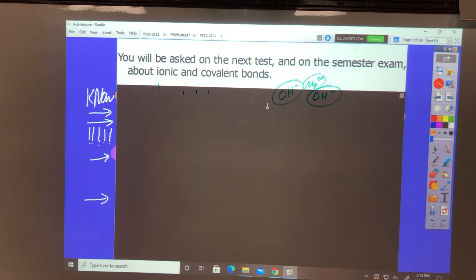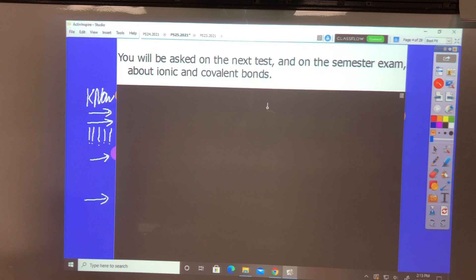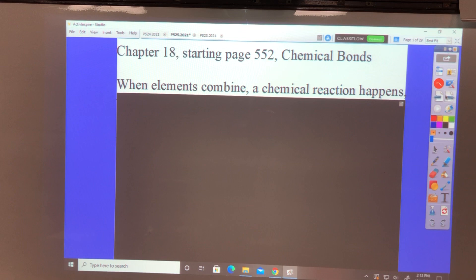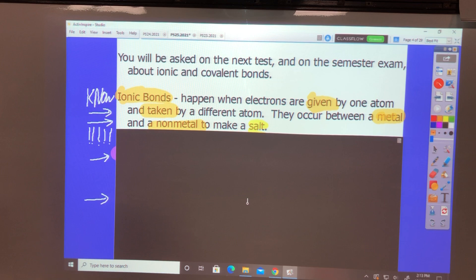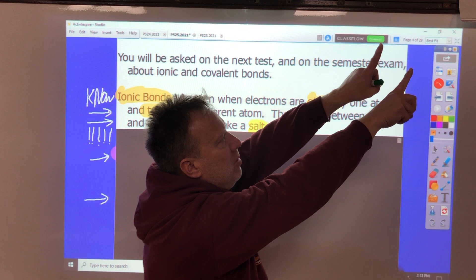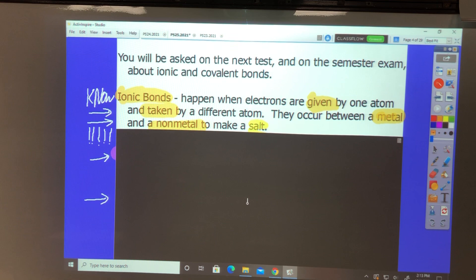You will be asked about ionic bonds and covalent bonds and metallic bonds, but metallic bonds aren't as big of a deal. Notice the capital letters, arrows, exclamation points—kind of important. Ionic bonds happen when electrons are given by a metal atom and taken by a non-metal atom. When you're done, you get a salt, an ionic solid.